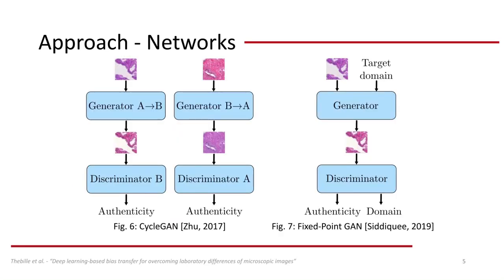CycleGANs and UnitCycleGANs consist of four neural networks: two generators and two discriminators. For biostransform, the generators have the task of transforming the input images to the other domain while keeping the content intact. The discriminators, in turn, have to tell real and fake images apart. In contrast to CycleGANs, Fixed Point GANs only use a single generator and discriminator. The generator uses the input image and the label of the target domain to transform images, and the discriminator judges the authenticity and the domain the image belongs to.